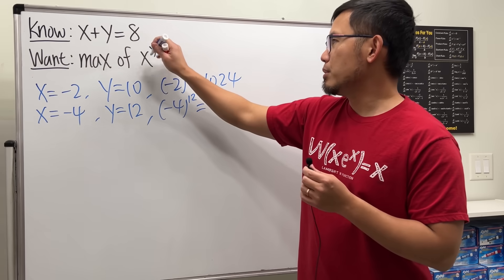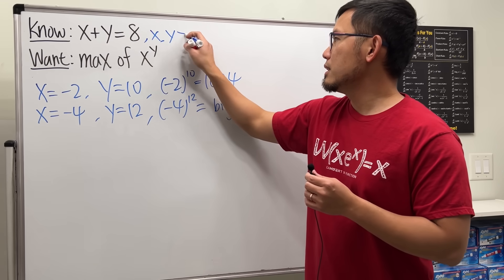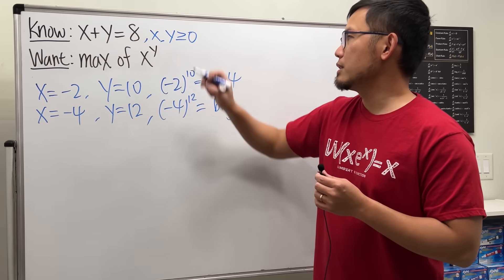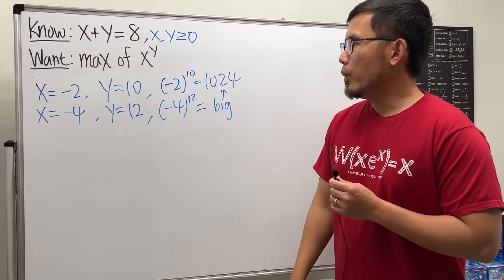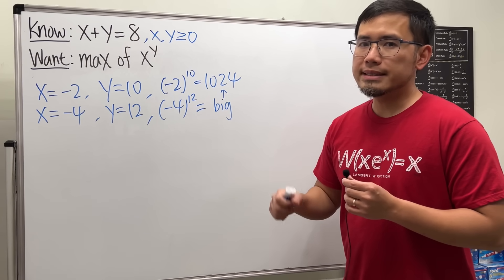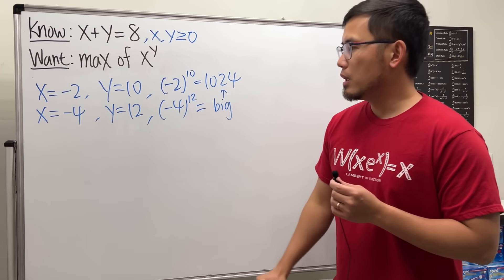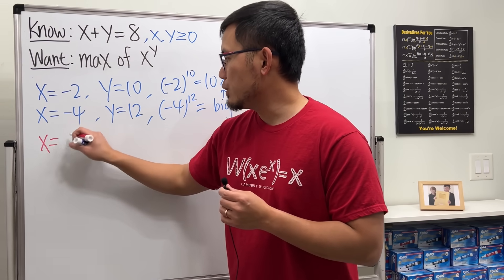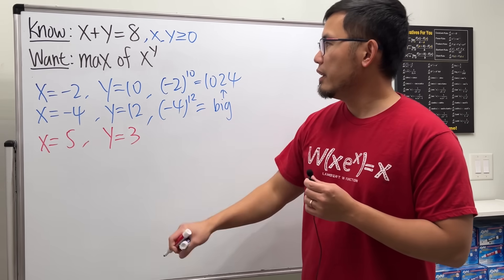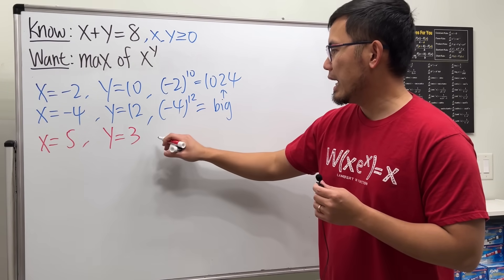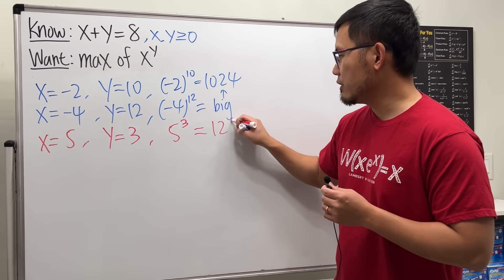We want these two numbers both to be non-negative. What if x and y are just whole numbers? If we have x equal to 5, that means y would just be equal to 3. Then we are looking at 5 to the 3rd power, which is 125.